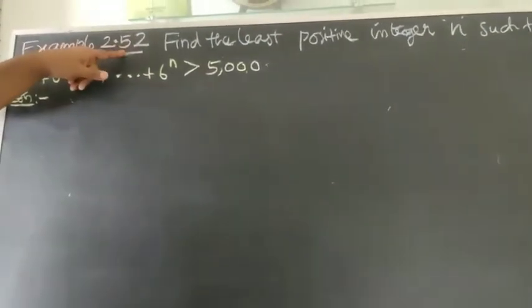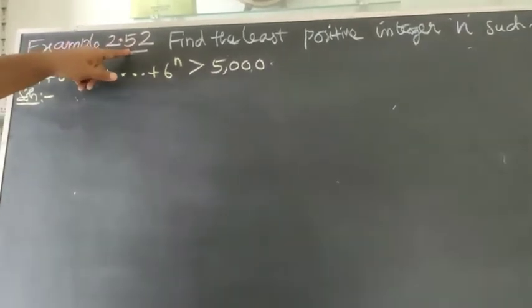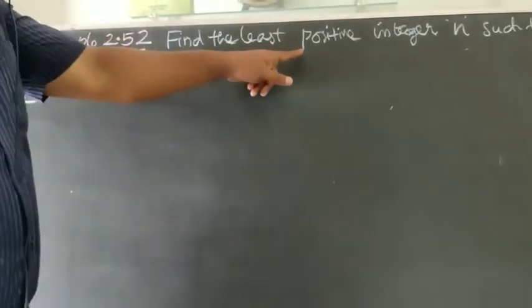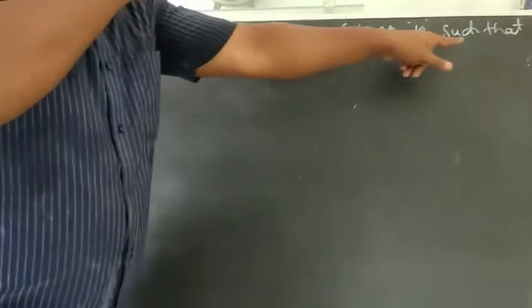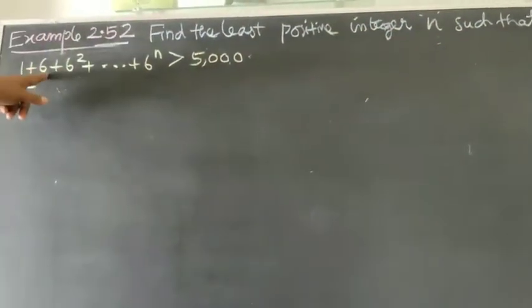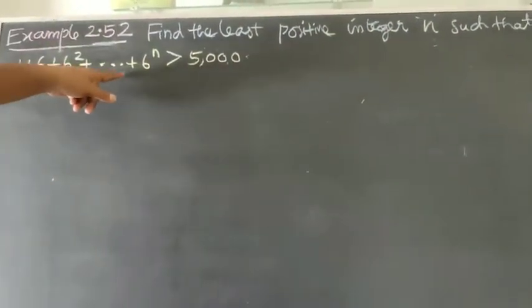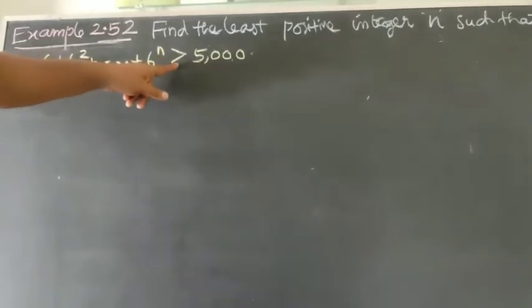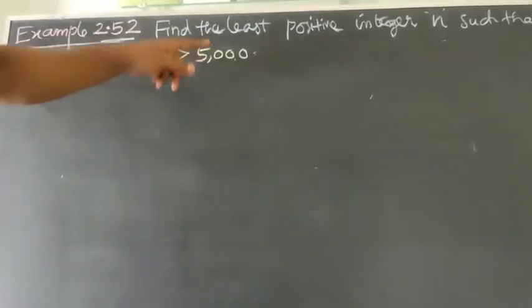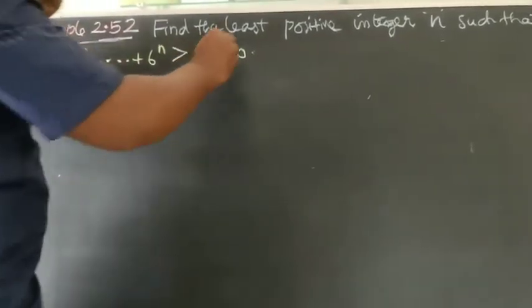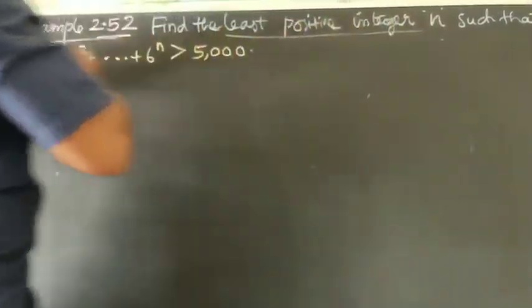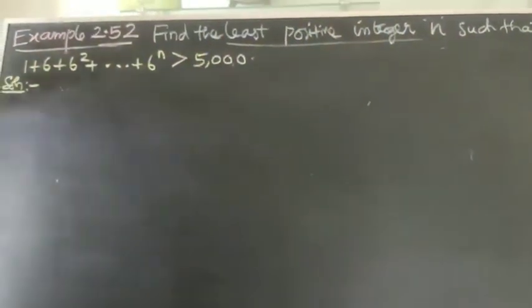If I go over Example 2.52: Find the least positive integer n such that 1 plus 6 plus 6 squared plus etc. plus 6 power n is greater than 5,000. Find the least positive integer n.